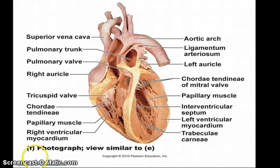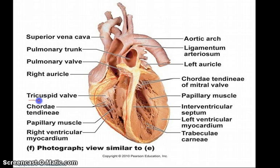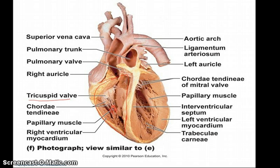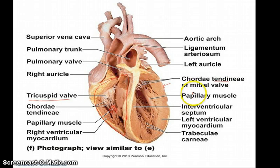This is a frontal section — an anterior view of the heart — showing things you'll see during next week's dissection. On the right side, between the right atrium and right ventricle, there's a valve called the tricuspid valve because it has three flaps. Coming down from the tricuspid valve are white cords called chordae tendinae. On the left side, there's the bicuspid valve, also called the mitral valve, and you have a good view of the papillary muscle here.